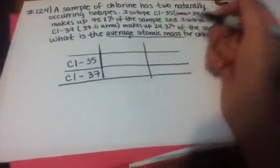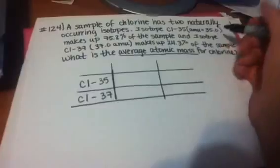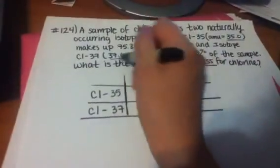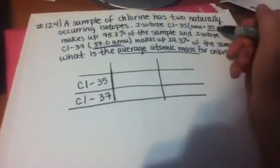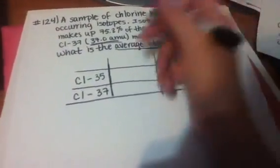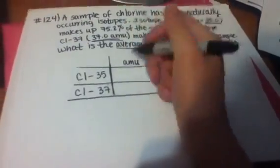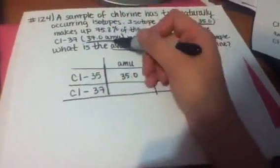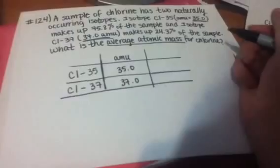We're going to put what we are given. And so for both of these, they give us their mass. So for Cl-35, we know that the mass is 35, so I'm going to put right here amu. This one's 35. And for Cl-37, it's 37. So I write 37.